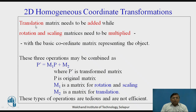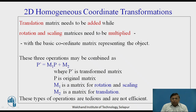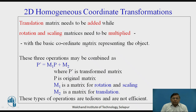To summarize towards developing an algorithm: the translation matrix we are adding, and for rotation and scaling we are multiplying. With this, if we try to have a common way of representing these transformations in algorithm form, we may use P-dash equals M1 times P plus M2, wherein P-dash is the transformed state, P is the original matrix, M1 is the matrix for rotation and scaling used for multiplication, and M2 is the matrix for translation which is added.